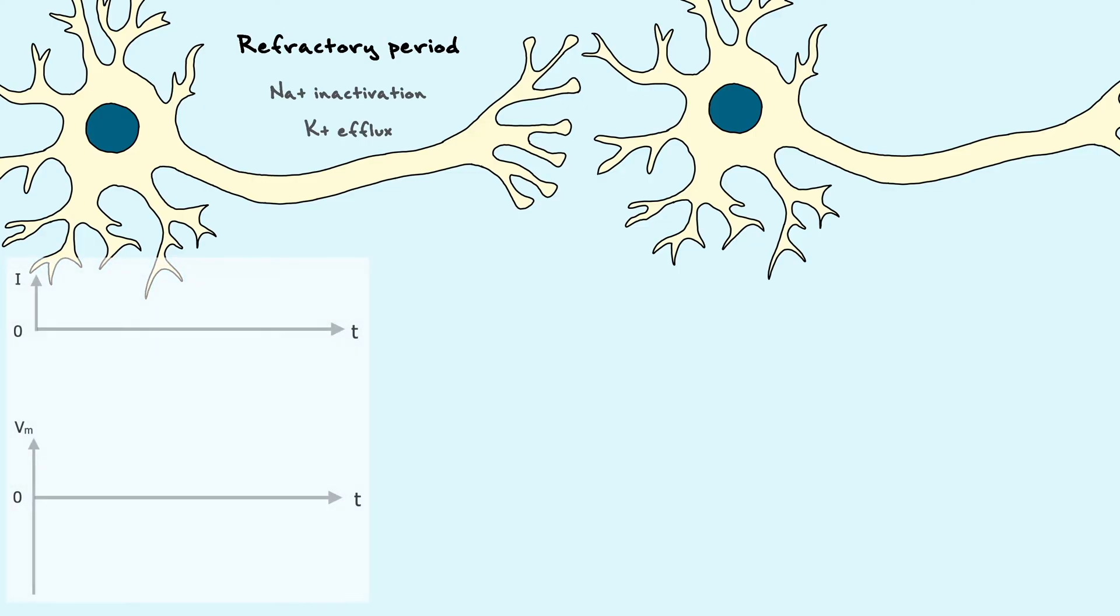When that occurs, we can show on our plot that this injection of current produces an action potential that travels across the second neuron.